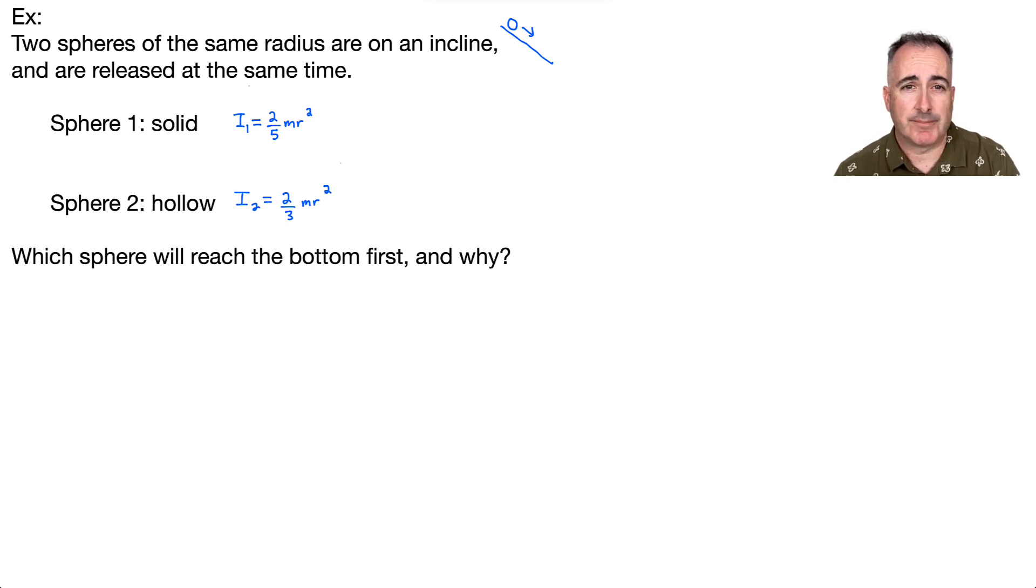And what does that mean? Well, that means that it's going to resist the motion least, so it's going to be the easiest to move. It'll get down to the bottom first. Now another way to think about it is like this. So this means that solid one, which has the smallest moment of inertia, means it'll resist the motion less. And that means it has more translational kinetic energy left over. In other words, it arrives first.